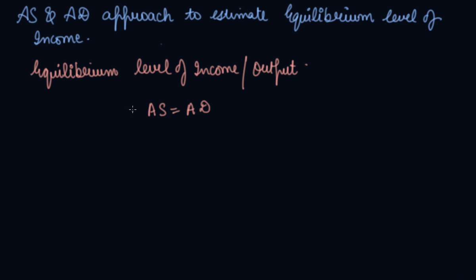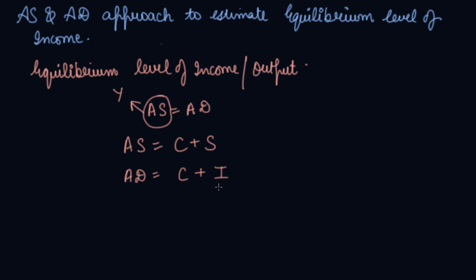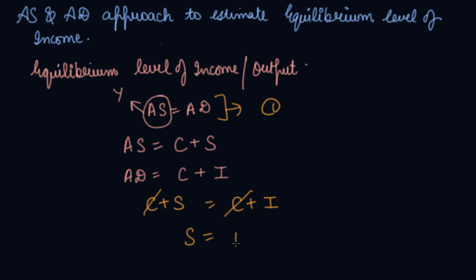Aggregate supply means you are generating income, so this is equal to Y. Aggregate supply is equal to consumption plus saving (C + S). Aggregate demand is equal to private consumption plus investment expenditure (C + I). When equilibrium is attained, C + S equals C + I, so saving is equal to investment expenditure, and the equilibrium level is attained.